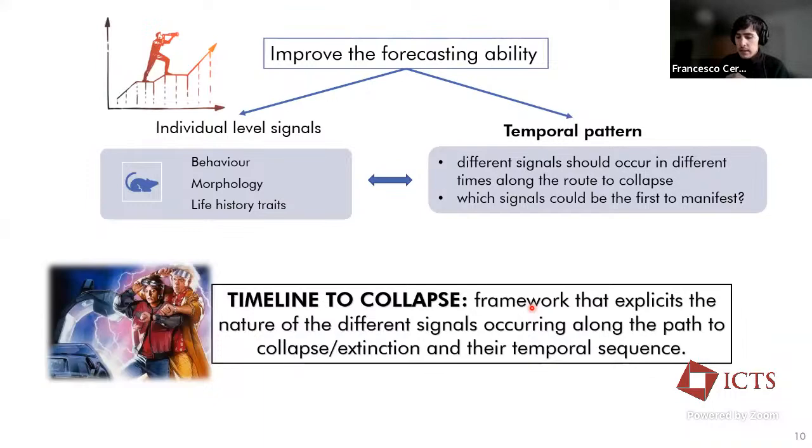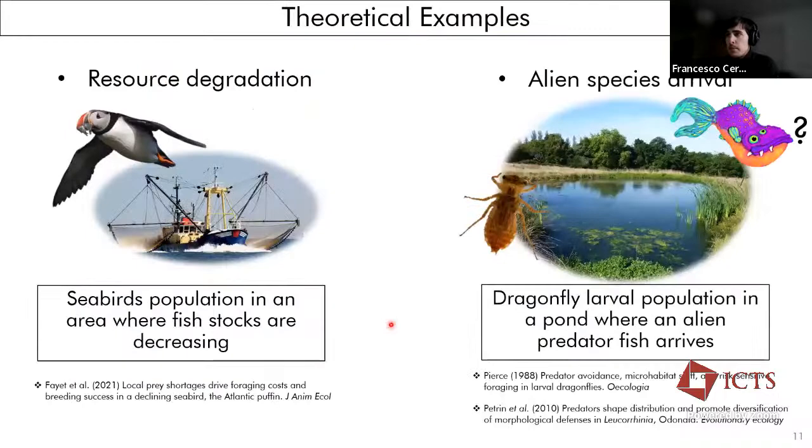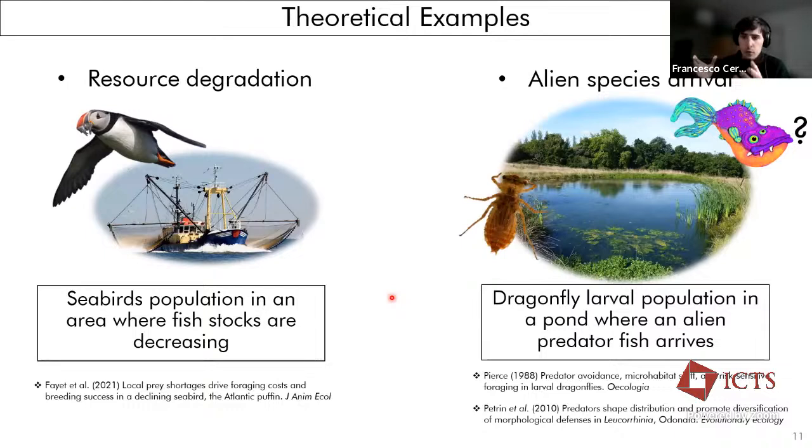Let's try to have a grasp of it by looking at two parallel theoretical examples, coming from real life papers, in which we pose, first, a seabird population that lives in an area where the fish stocks are continuously decreasing, due, for example, to overharvesting by men. And on the other hand, we pose a dragonflies population still in the larval phase when they are just aquatic and they live in a pond where an alien species can arrive and be a new predator. So a new predation stressor to the dragonflies. And let's suppose that we can monitor multiple variables, such as behavioral traits, morphological traits, and of course, counting the abundance of the population through time.